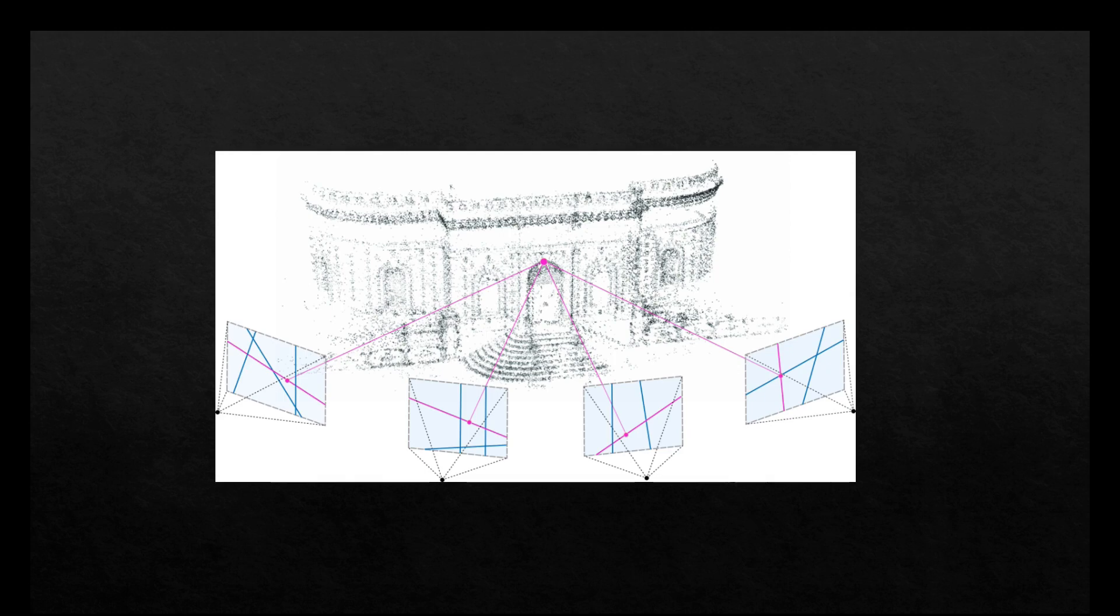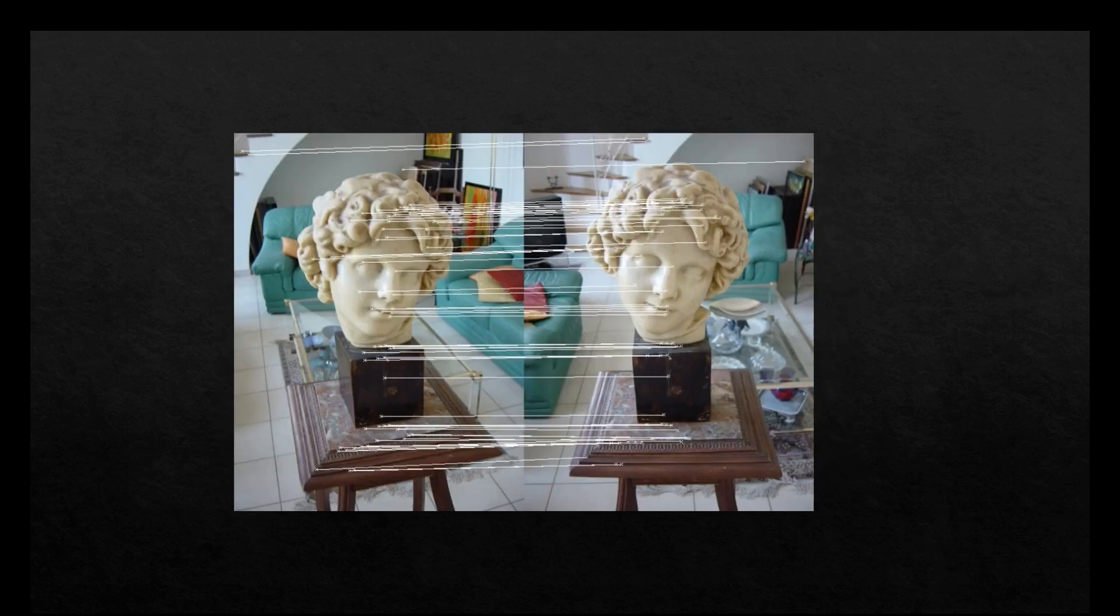One of the most widely used feature detectors is the Speeded Up Robust Features or SURF. The features detected from all the images will then be matched. One of the matching algorithms that track features from one image to another is the Lucas-Kanade tracker.